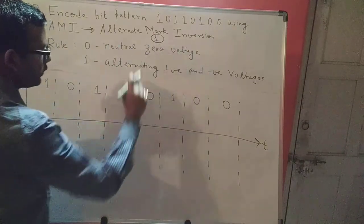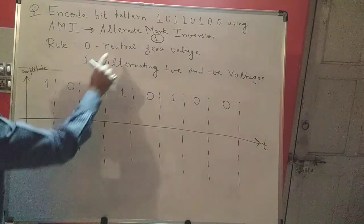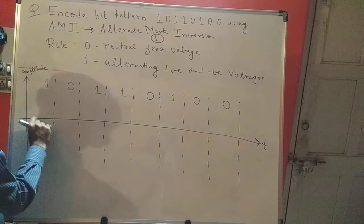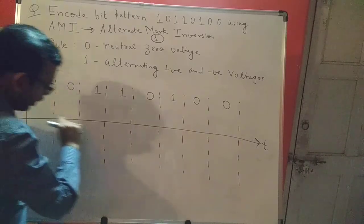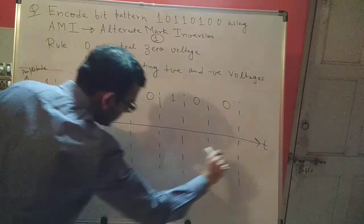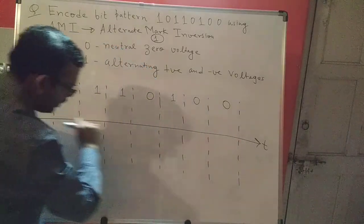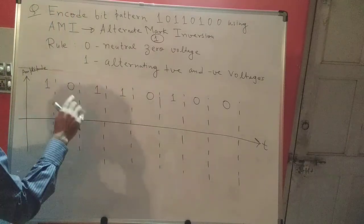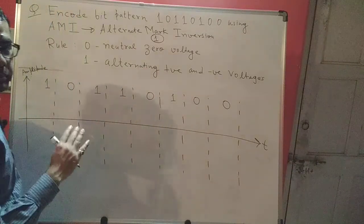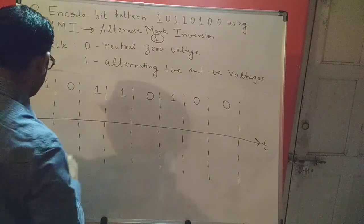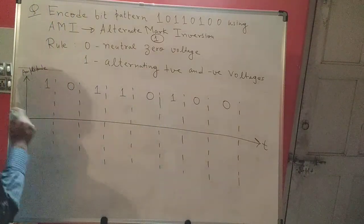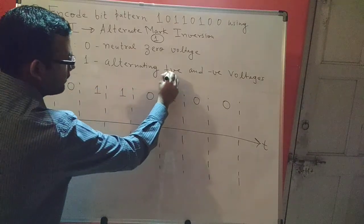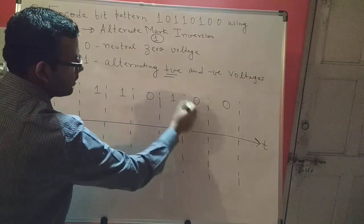The rule is very simple: zero will represent a neutral zero voltage. That means once I find a zero, I need to draw the signal along the time axis. And if I find a one, I need to alternate between positive and negative voltage.